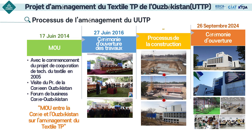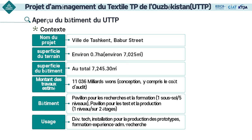Voici la photo de la cérémonie d'inauguration. Il a été construit au cours des cinq dernières années et avec la cérémonie d'ouverture le 4 septembre 2018, nous soutenons maintenant les entreprises ouzbèkes locales et menons un projet de formation pour former la main-d'œuvre technique. L'emplacement se trouve à Tashkent et la superficie est d'environ 0,7 hectare. Le coût total de la construction était d'environ 11 milliards de won et il se compose d'un pavillon pour les recherches et la formation et d'un pavillon de production pour les tests.